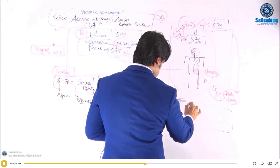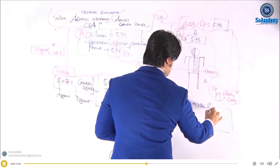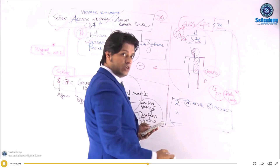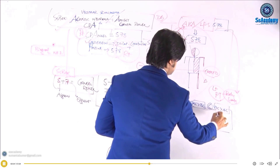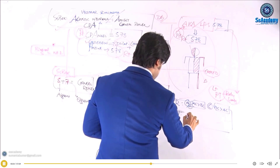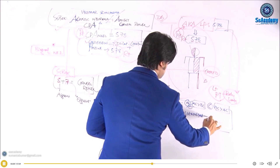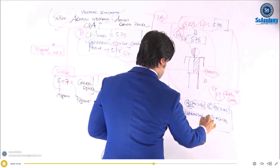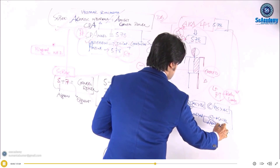In the Rinne test: normal means AC is greater than BC. Conductive deafness means BC is greater than AC. For nerve deafness, AC is also greater than BC — same as normal. In the Weber test: lateralized to normal means sensorineural hearing loss; lateralized to the abnormal side means conductive hearing loss.